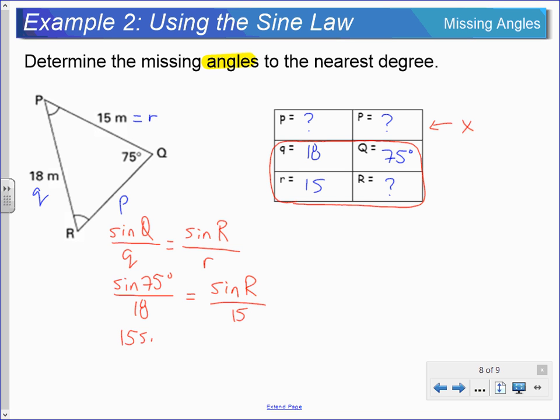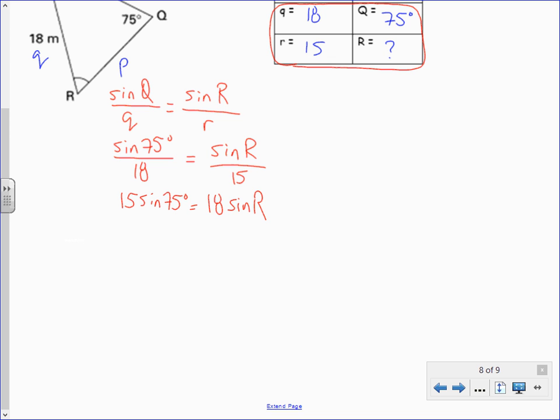We'll do our cross multiplication. So 15 sine 75 is going to give you 18 sine R. Again, what we're looking for is the value of R. So this sine R, we're going to have to isolate it. So we can divide both sides by 18. And remember in the first example, that this reduces to lowest form of one over one. So we're left with sine R over here, and this ratio over here.